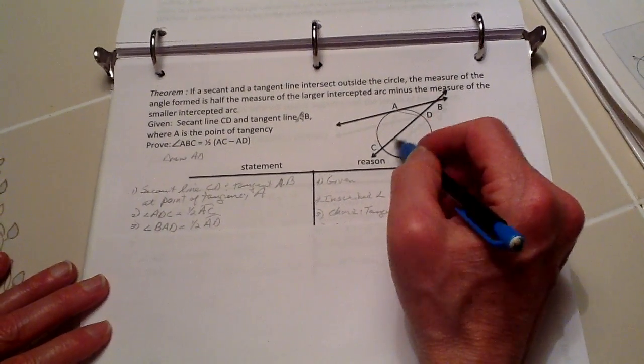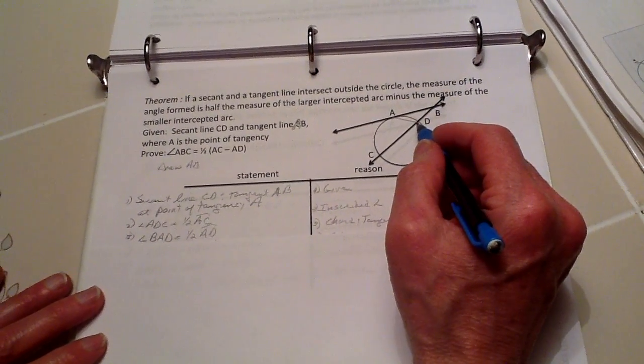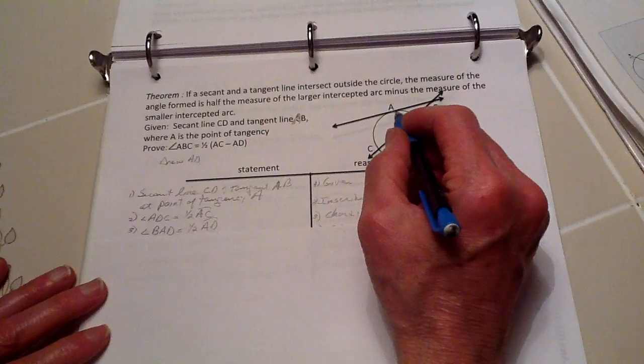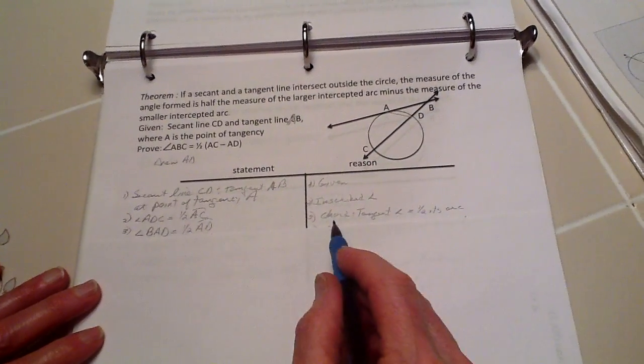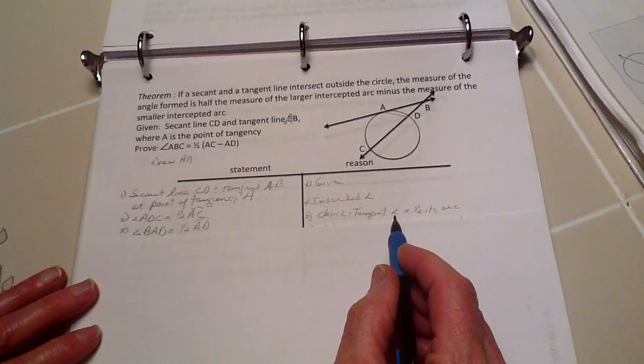We also know that the angle BAD is going to equal one-half this arc because of the chord tangent angle theorem.